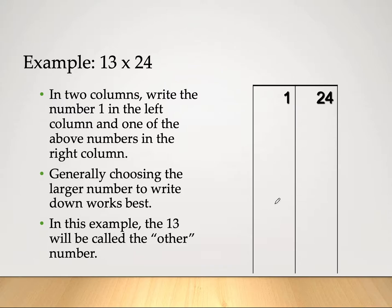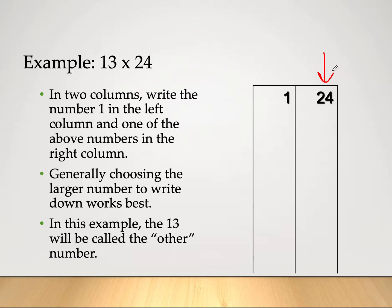Let's look at one example: 13 times 24. In two columns, we write the number 1 in the left column and one of the two numbers in the right column. We choose 24 because it's best to operate with the higher number. Choosing the larger number means we need to double fewer times.